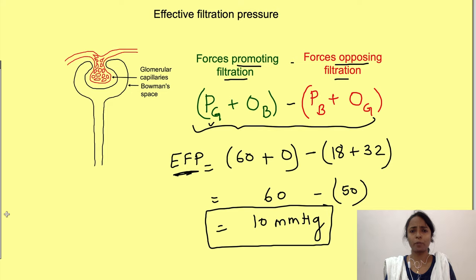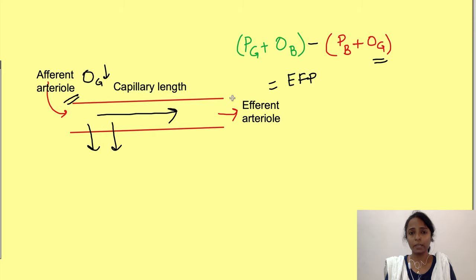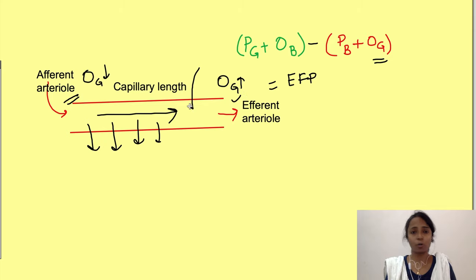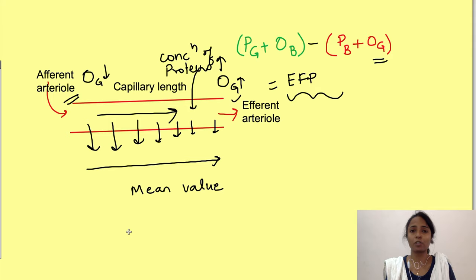One important point: as filtration proceeds along the capillary, the values of oncotic pressure change along the capillary length. At the afferent arteriole end, oncotic pressure is a little less compared to the efferent arteriolar end, because as filtration proceeds, oncotic pressure rises due to increasing concentration of proteins. Therefore, the effective filtration pressure and the rate of filtration also differ along the capillary length. We take mean values along the capillary length for this calculation.